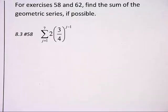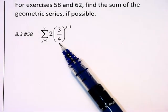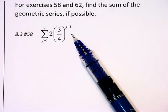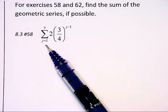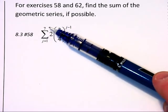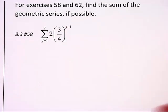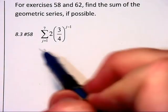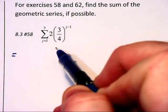Now we are being asked to find the sum of the geometric series, if possible. We look at this sigma notation and see that the starting point is 1, the ending point is 7, so basically we have 7 things to add up. When we substitute 1 in,